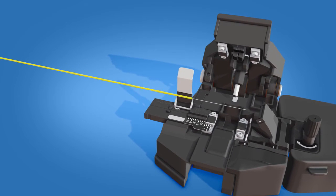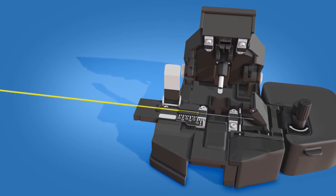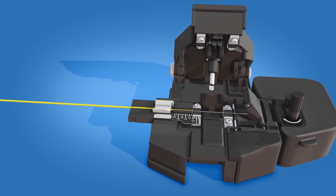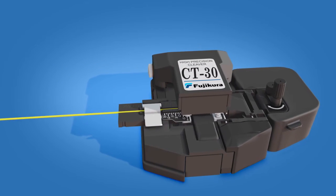Clean the fiber with a lint-free wipe and fiber preparation fluid. Place the fiber into the CT30 cleaver at the 10.5 millimeter cleave length. Close the clamp. Push the cutting lever downward to cleave the fiber.